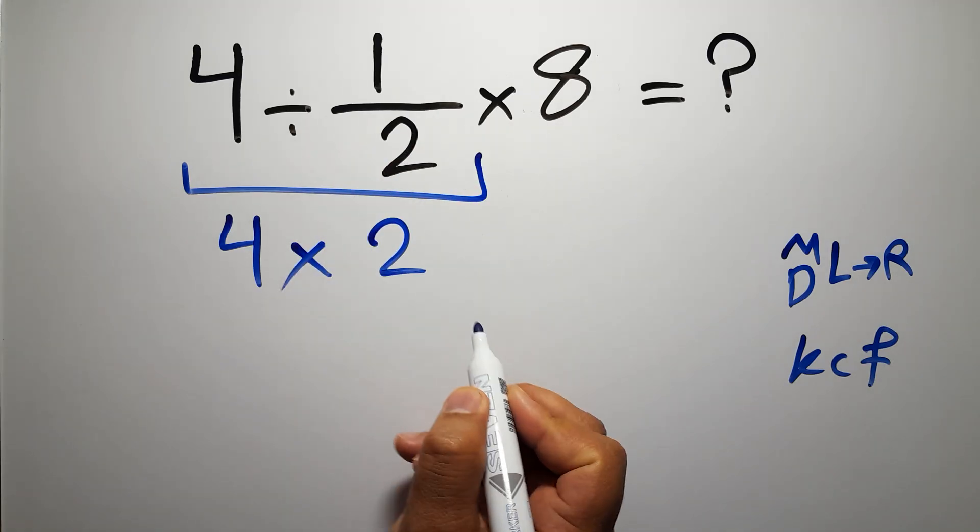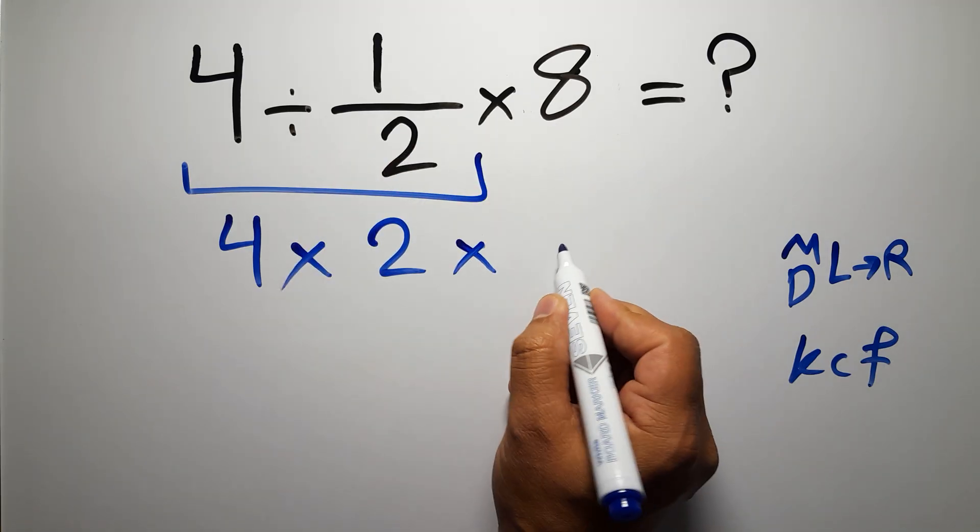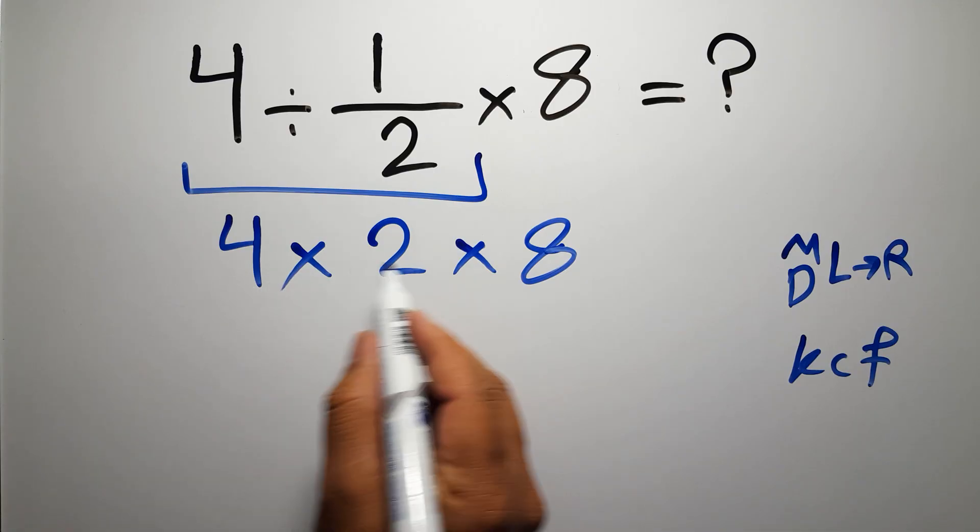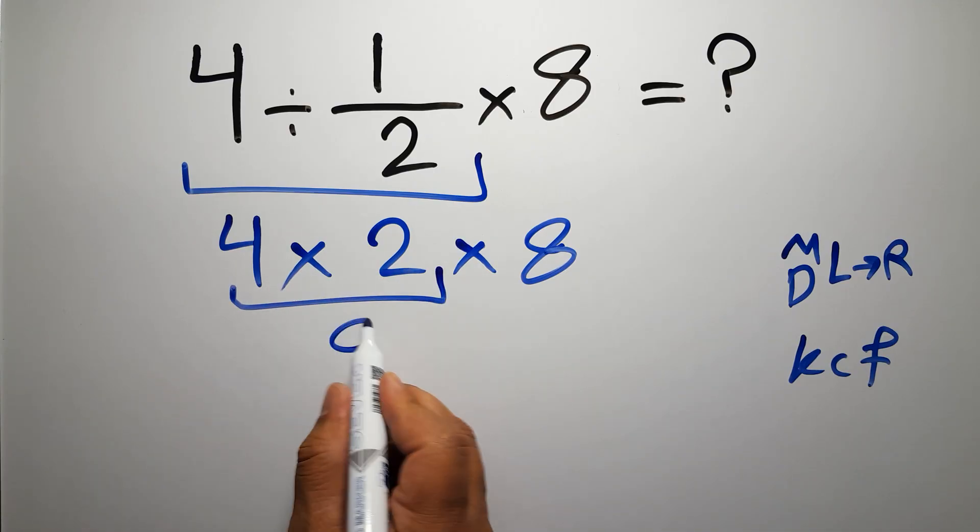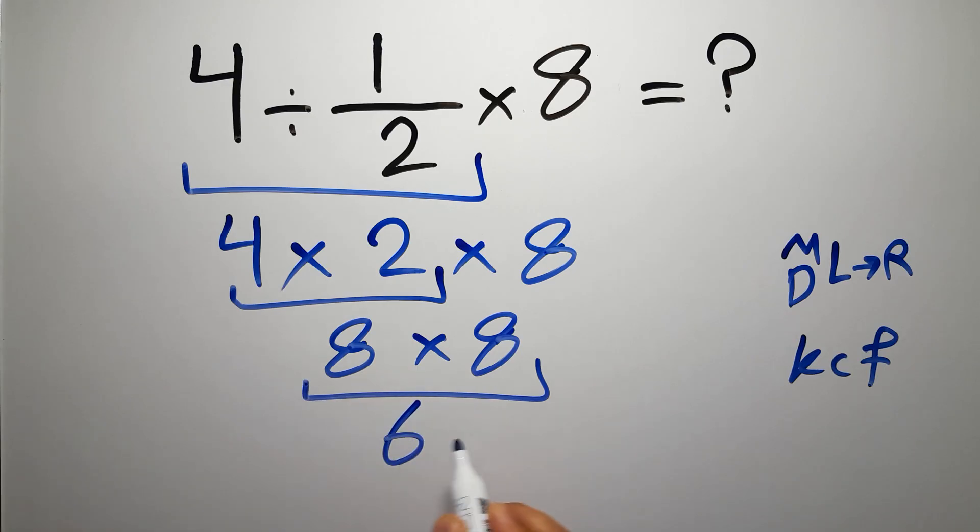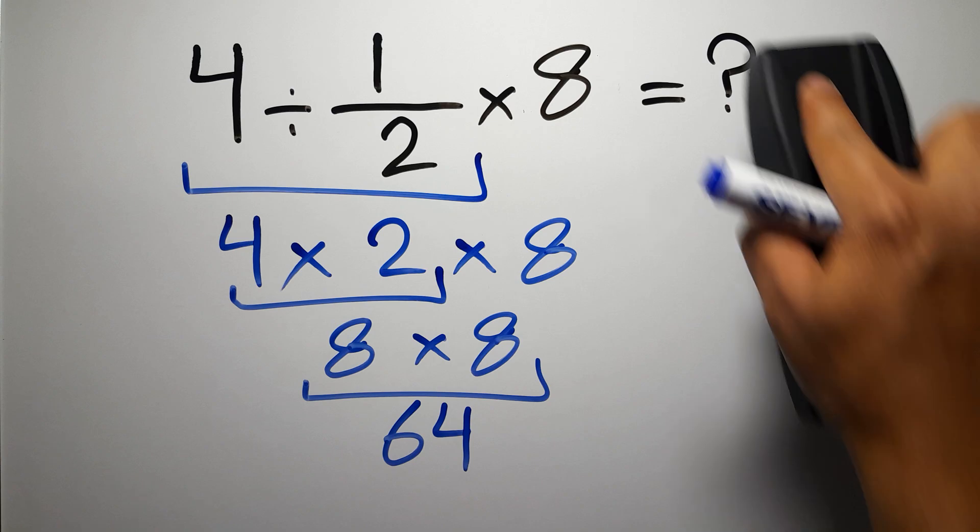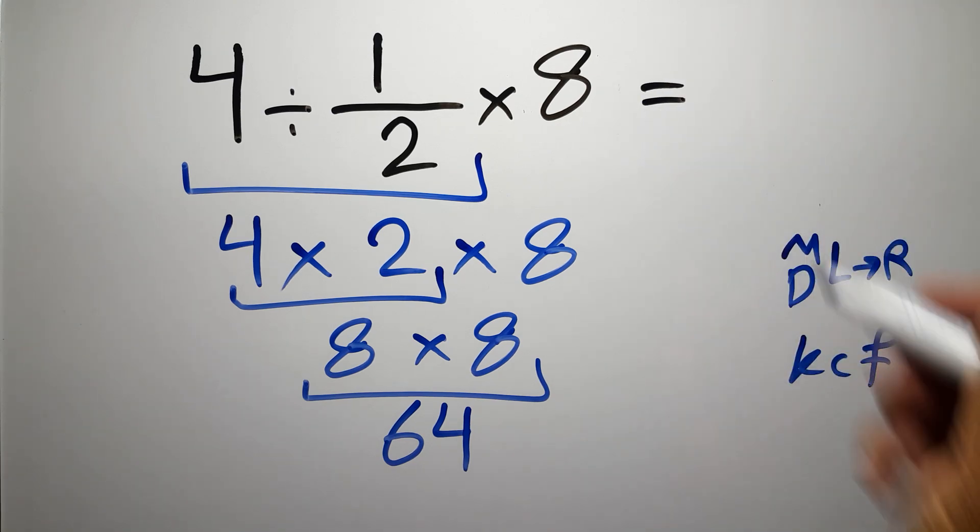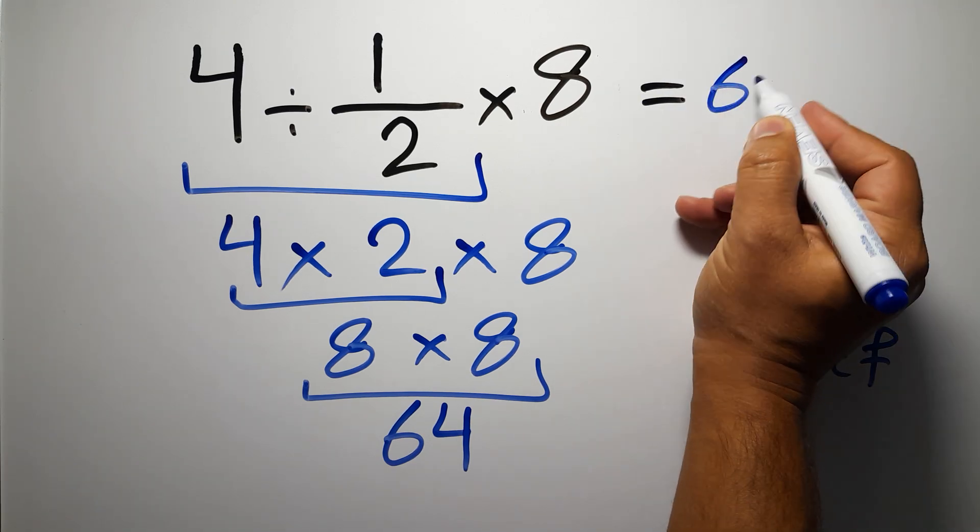Then times 8. 4 times 2 gives us 8, and 8 times 8 is just 64. And this is our final answer to this problem. The correct answer is 64.